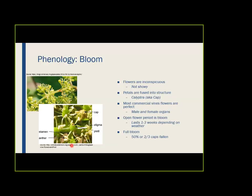The open flower period of bloom is about one to three weeks. What we consider full bloom is when 50% or two-thirds of these caps have fallen off the flower clusters. When half or two-thirds of these fused structures fall off, we consider that full bloom.